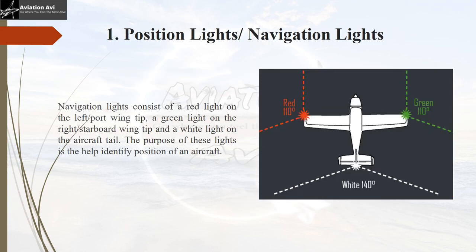The navigation lights consist of a red light on the left or port wing tip, a green light on the starboard or right wing tip, and a white light on the tail of the aircraft. The red light on the left wing tip has a coverage angle of 110 degrees above and below the horizontal plane. The green light on the right wing tip also covers 110 degrees, and the white tail light covers 140 degrees above and below the horizontal plane.